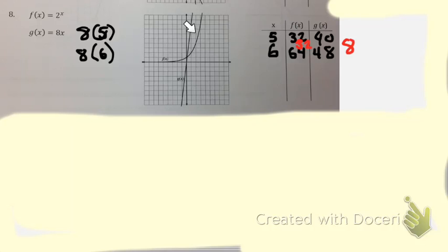So on our picture, on the graph, it looked like they were never going to be, f of x was never going to be greater, right?